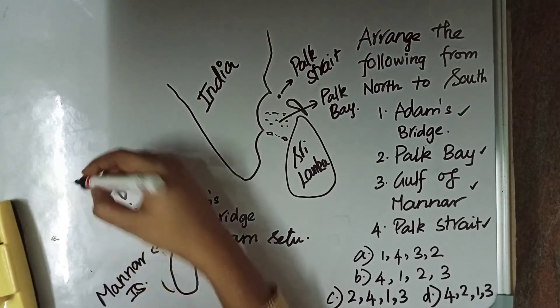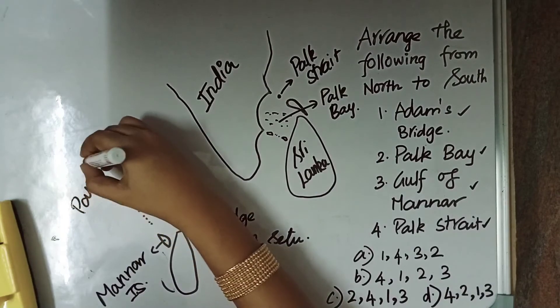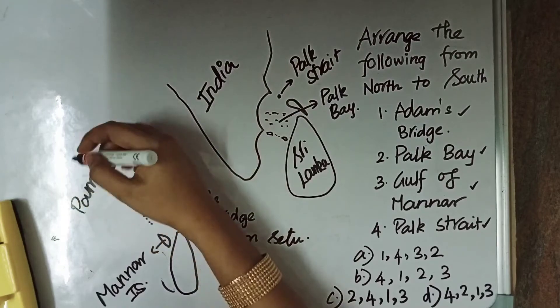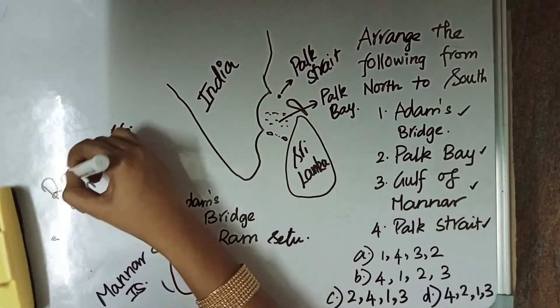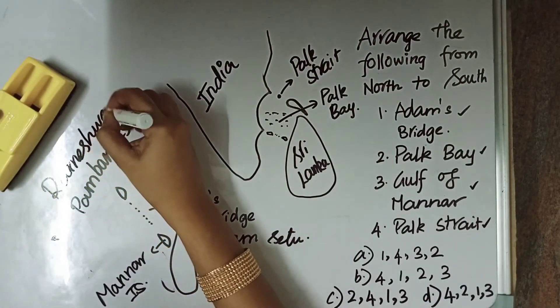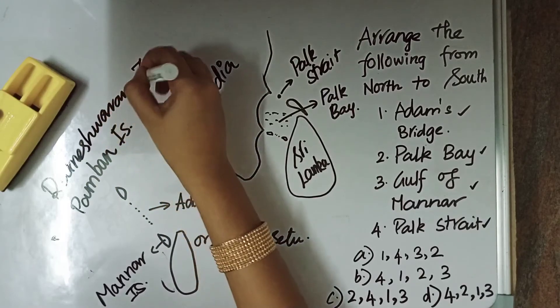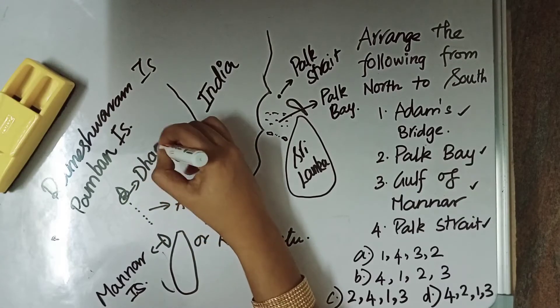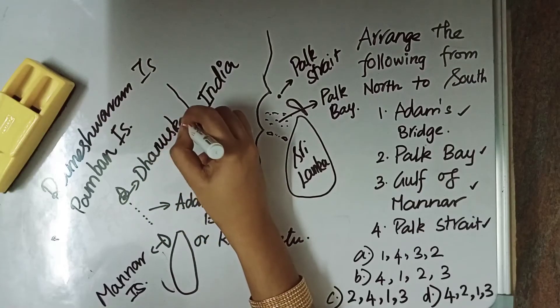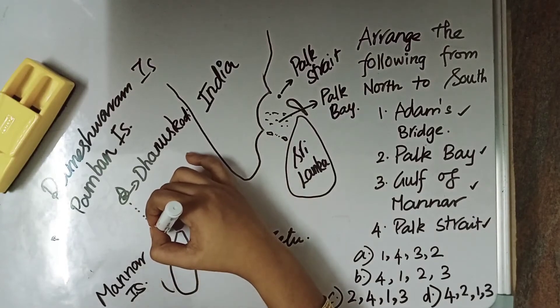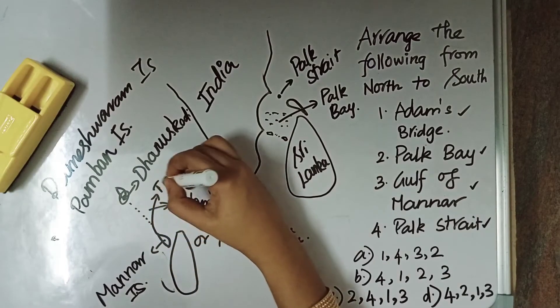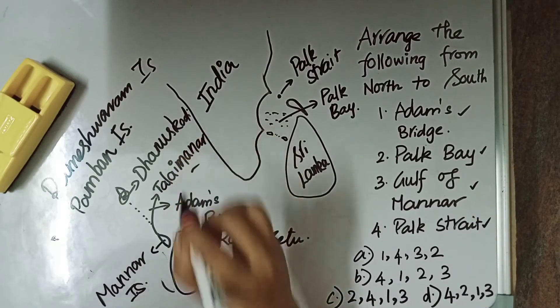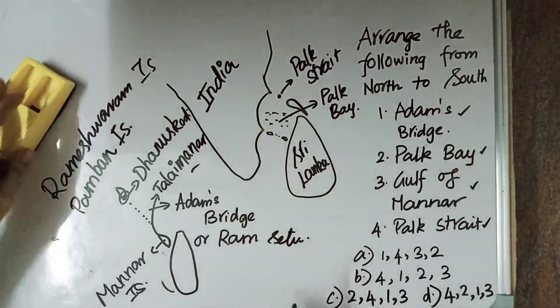On the Indian side we have Pamban Island. We also have Pamban Bridge here. That is also famous. Pamban Island is also called Rameshwaram Island. On the tip of this region it is called Danushkodi. And here this tip region is called Talai Manar.